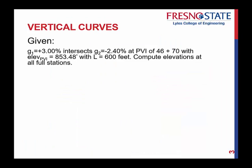So if I told you this: given g1=+3.00% intersects g2=-2.40% at PVI of 46 + 70 with elevation at the PVI of 853.48, and I'm also telling you that the length of the whole vertical curve is 600 feet. So I want you to compute the elevations at all full stations.